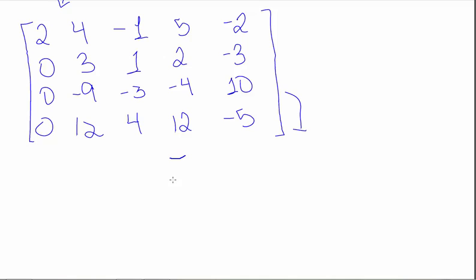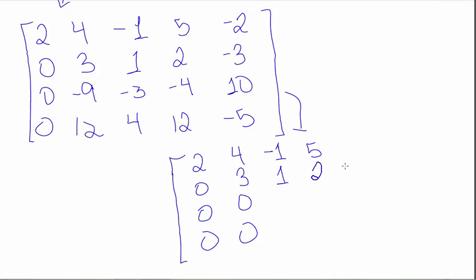We now work on the next one. So my first column is fine. Now I want to work on getting the 0s below the 3. So the first thing I need to do is to get rid of the negative 9. So I will do 3 row 2 plus row 3. This gives me 9 minus 9 is 0. 3 minus 3 is 0. 6 minus 4 is 2. And negative 9 plus 10 is 1.